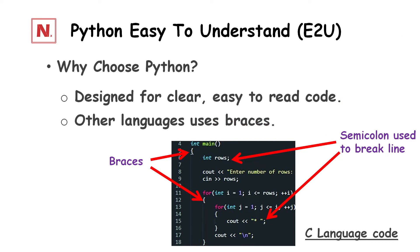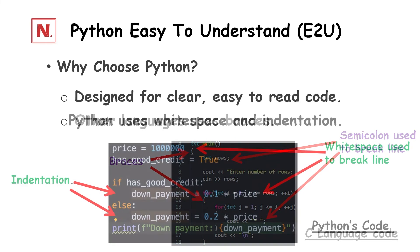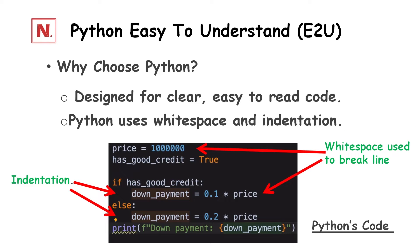So why would you want to choose Python? As I mentioned, Python was designed for clear, logical code that is easy to read and easy to learn. Other programming languages use braces and brackets that can make code convoluted and may be hard to read. But Python makes use of something called whitespace and indentation that we'll learn about later on in this series that makes its code very accessible.